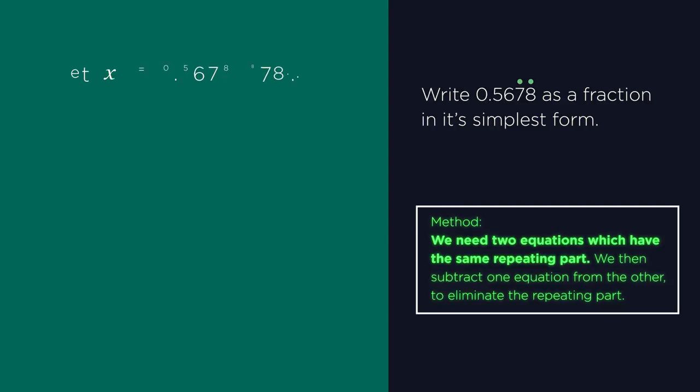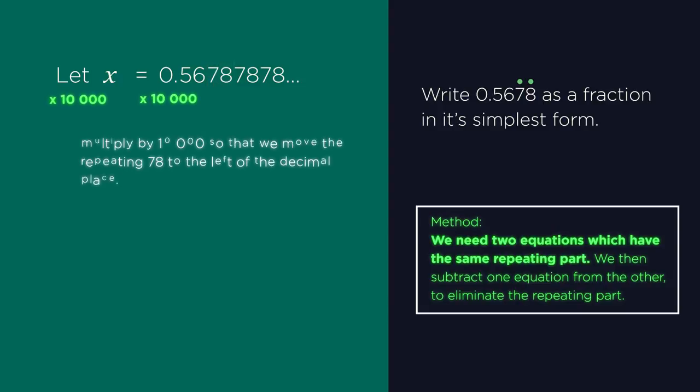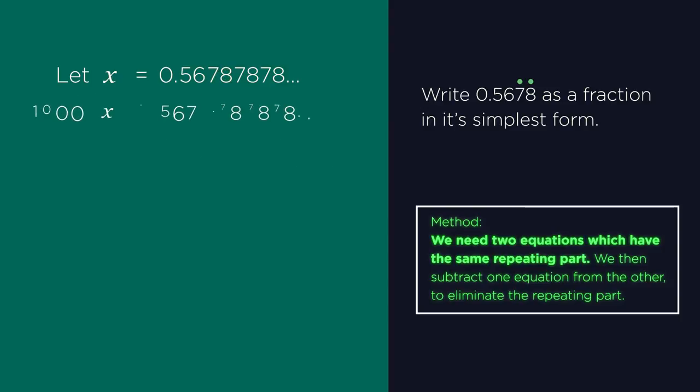As always, let x equal 0.56787878. Be careful that it is only the seven eight that's repeating. So we need to multiply by ten thousand so that we move the repeating seven eight to the left of the decimal place. So ten thousand x equals 5678.787878 recurring.